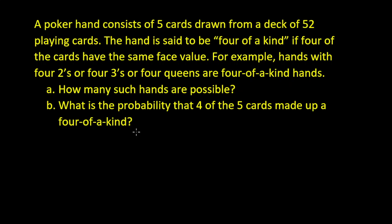Let's solve this question. A poker hand consists of 5 cards drawn from a deck of 52 playing cards. The hand is said to be 4 of a kind if 4 of the cards have the same face value. For example, hands with 4 twos, 4 threes, or 4 queens are 4-of-a-kind hands. Part A: how many such hands are possible? Part B: what's the probability that 4 of the 5 cards make up a 4 of a kind?